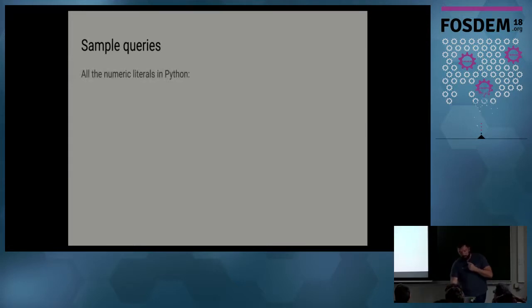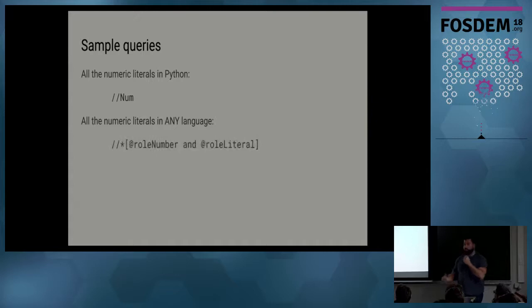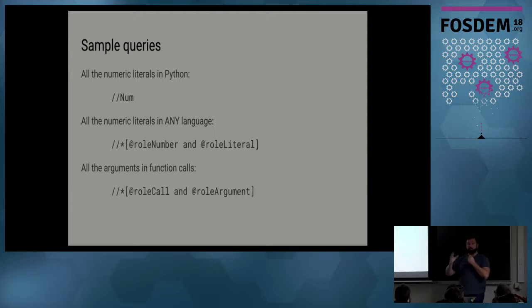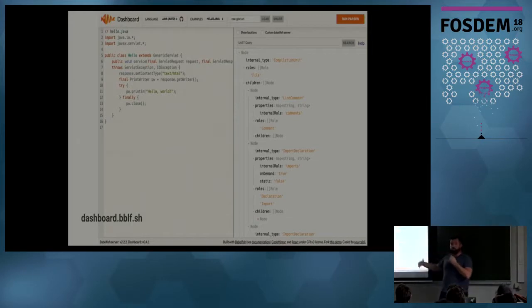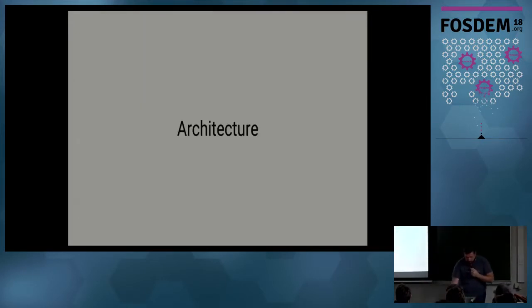The way we map it is you have for every internal type that is the element name in XML. The rest are basically attributes. Once you have this, you're able to query things. You can say, all the numerals in Python - well, this is the internal type NUM that happens to be the internal type for Python. You can say all the numerals in any language. And here, what you're passing is actually checking the role. You're saying role number and role literal. Also, you can do all the arguments in functions. So now what you're able to do is with a single line, you're actually able to extract information from petabytes of source code data.